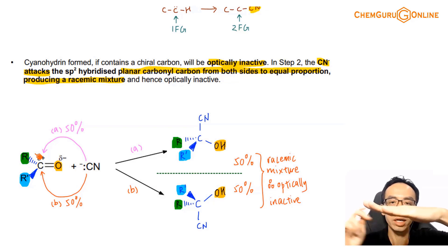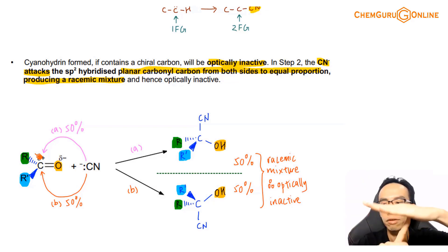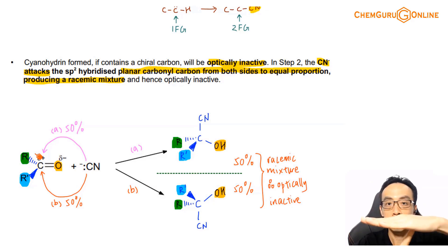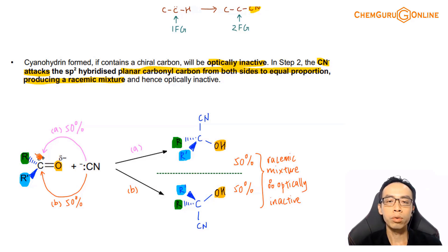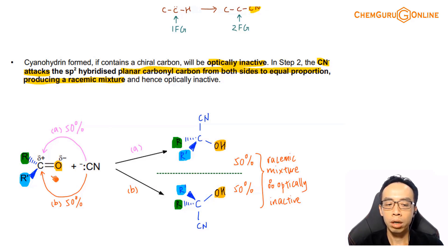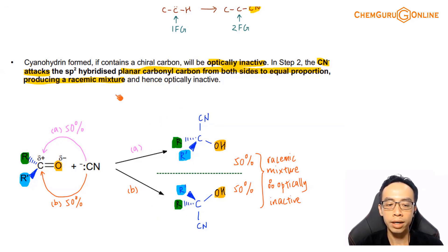Because both sides are equally exposed, the nitrile can attack from the top 50% of the time and from the bottom 50% of the time. Since it is planar and both sides are equally exposed, the nucleophile can attack from both sides to equal extent, and we end up with a racemic mixture.